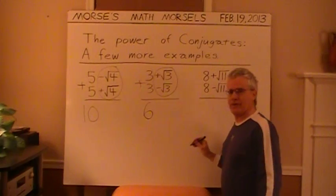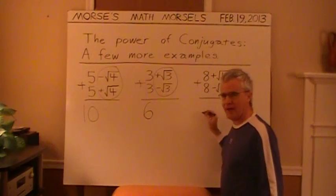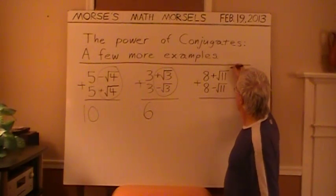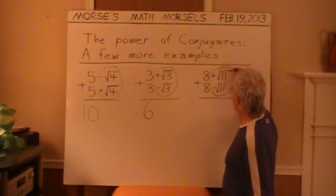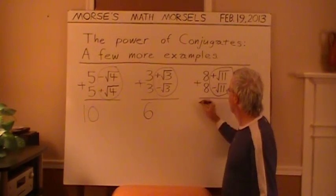And finally, 8 plus the square root of 11 added to 8 minus the square root of 11. And you guessed it, the square root of 11 items, the negative and the positive cancel, just leaving 16.